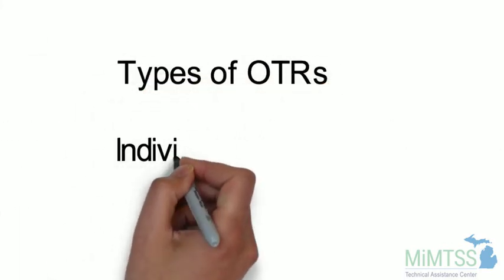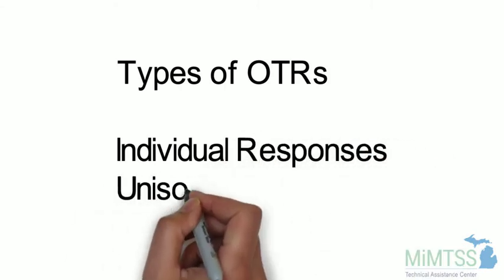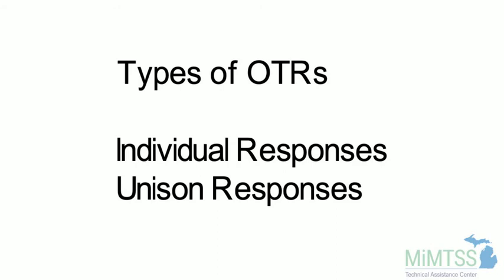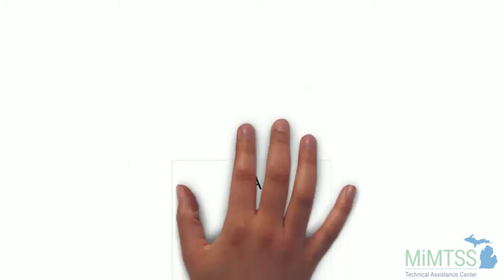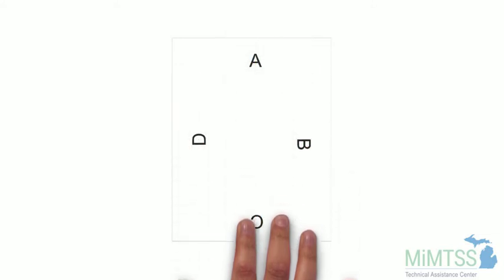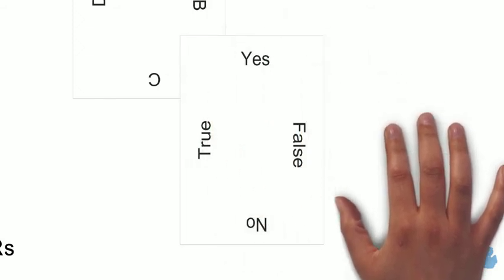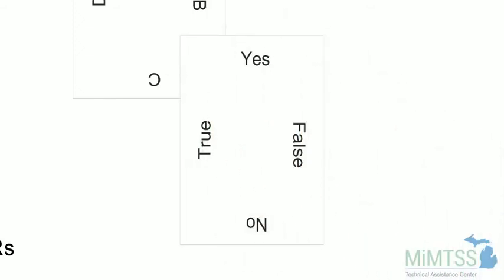The two types of OTRs most commonly referenced in the literature are individual responses and unison responses. An individual response might be when a teacher calls on an individual student to respond. In contrast, a unison response might be something like choral responding by the class to the teacher's prompt or question. A typical unison response OTR is the use of response cards. For example, giving each student a card with A, B, C, and D written around the perimeter of the page. Students can respond to a multiple choice question holding up the letter of their response for the teacher to see. Another example of a response card is seen here with the responses yes or no and true or false pre-written on the card.